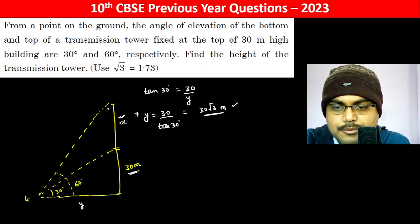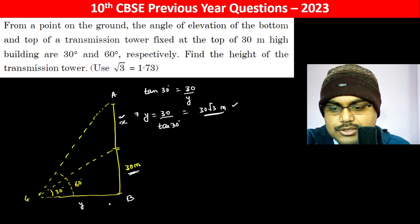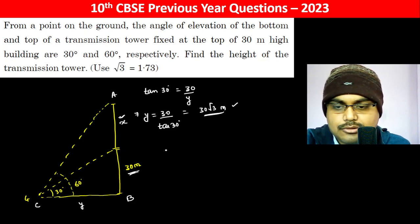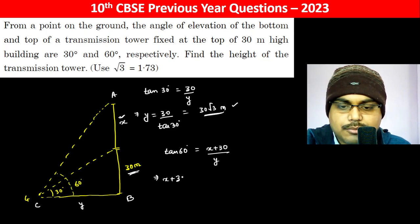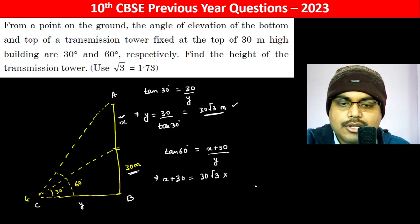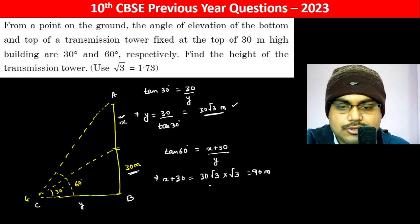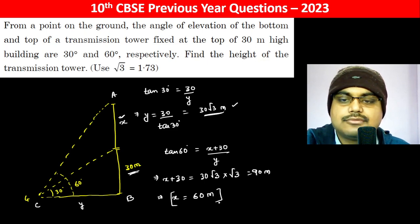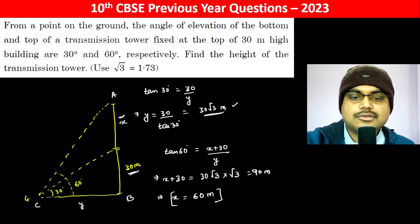Now for triangle ABC, tan(60°) equals x plus 30 divided by y. So x plus 30 becomes y times tan(60°), which is 30√3 into √3, giving 90 meters. Therefore x equals 60 meters, so 60 meters is the height of the transmission tower.